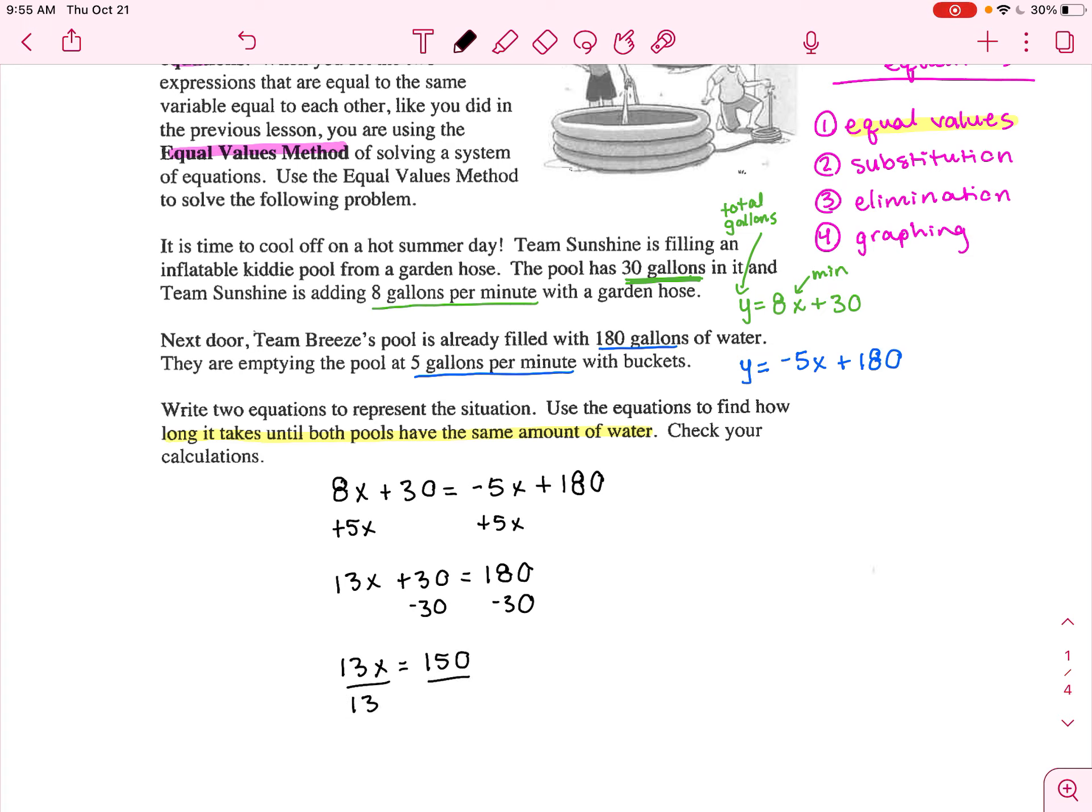Divide by 13, divide by 13. That does not go in evenly. But if we used a calculator, we would get that x equals 11.538 minutes.